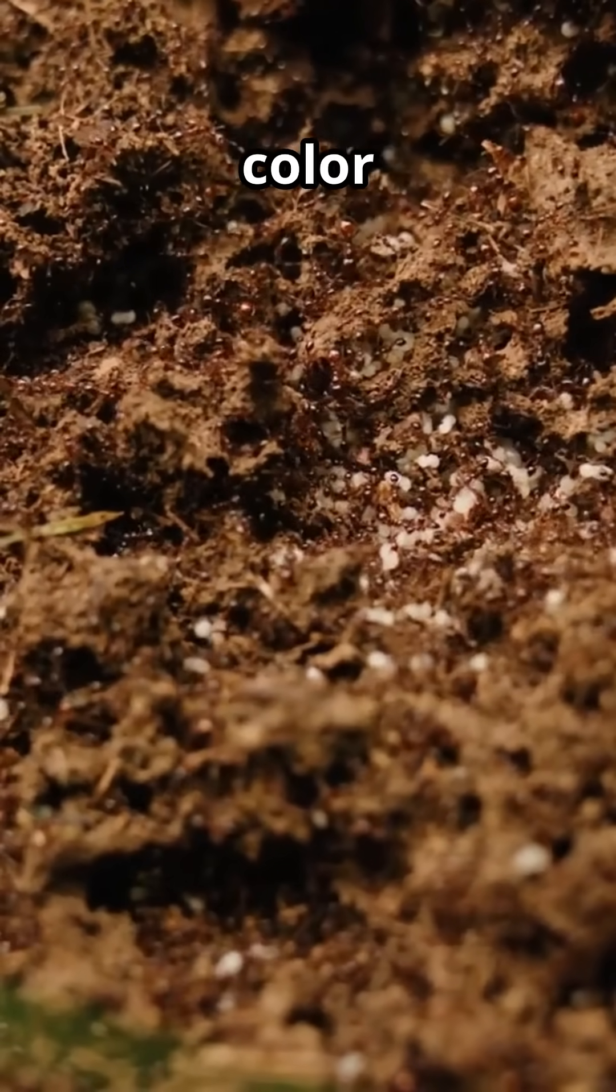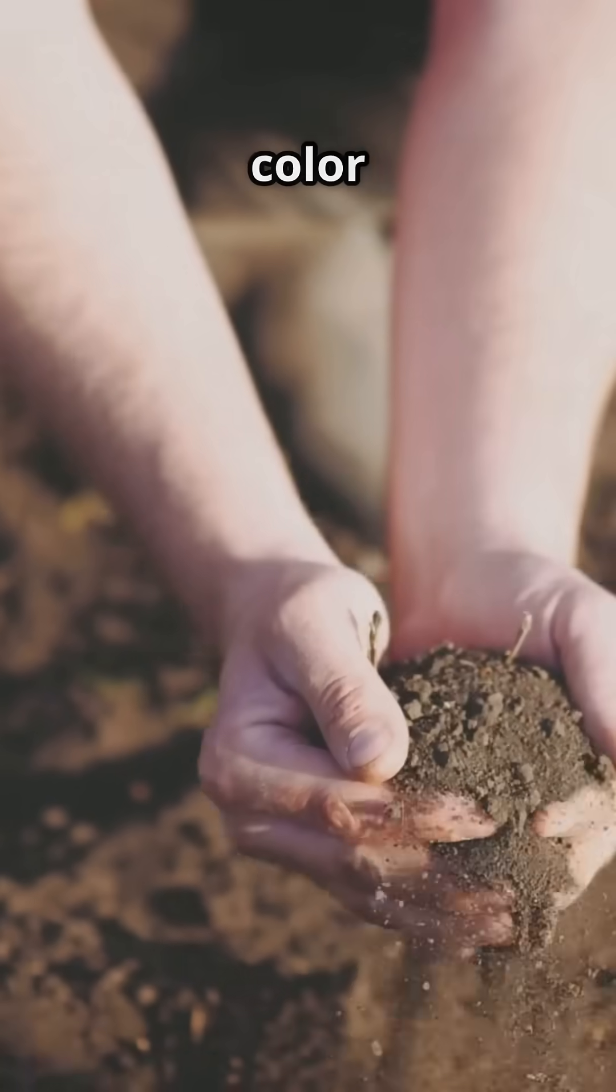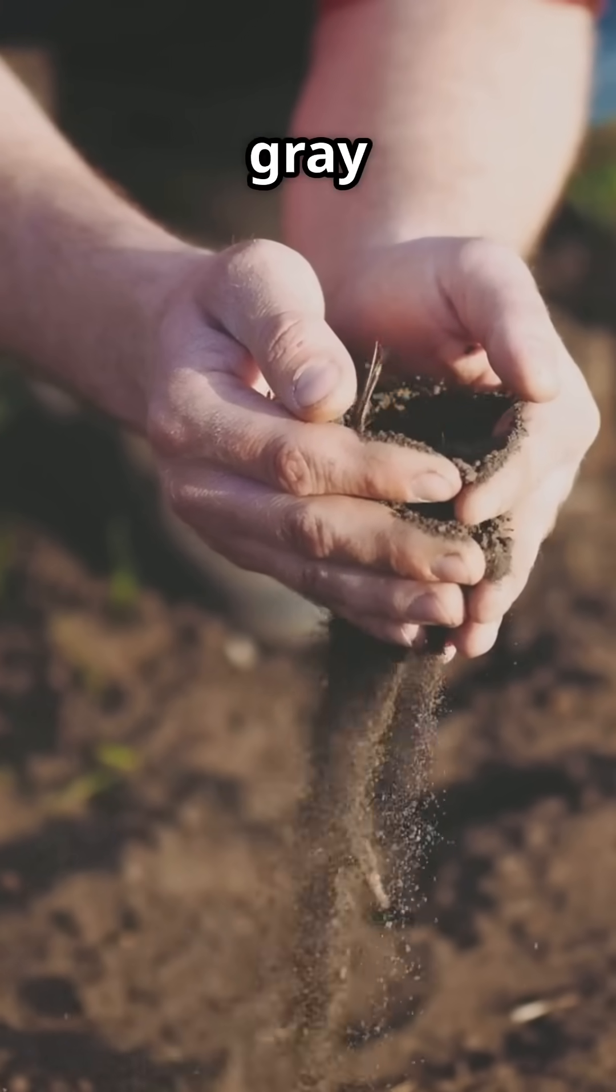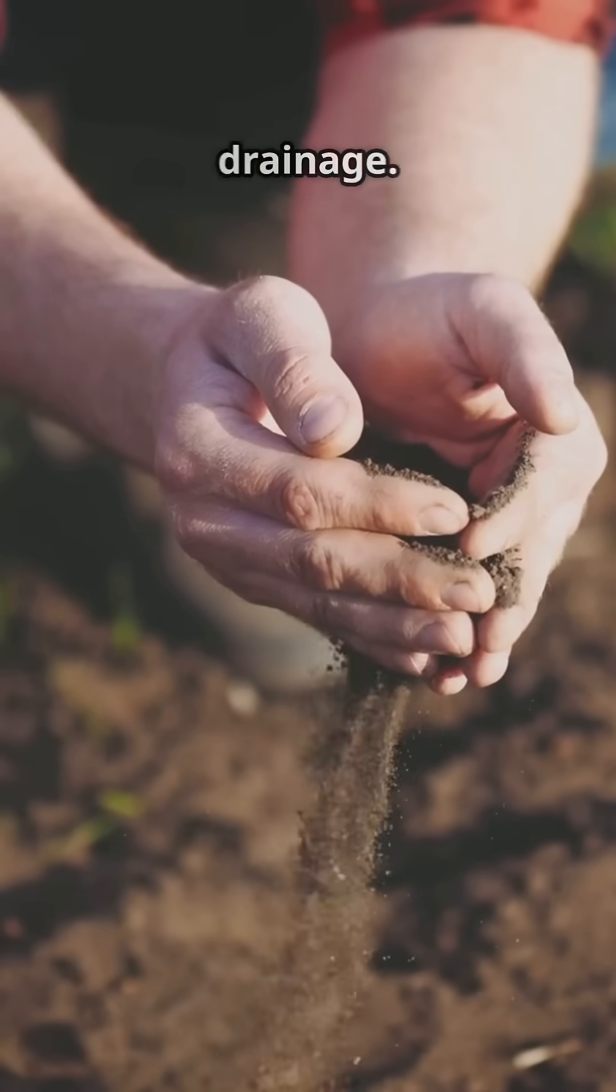Myth number 5. Soil color doesn't matter. Actually, soil color can give clues to its health. Brown or dark brown often means good organic matter but gray or yellow can signal problems like poor drainage.